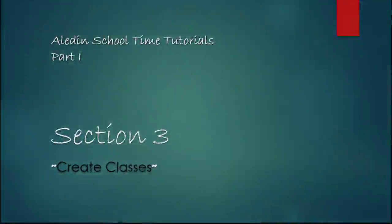Section 3: How to create classes. A class, as we all know, is a body of students who are separated in a room and taught together in a school setting. In Aladdin School Time, classes are created for each academic year to preserve student information. With the details given earlier, let us create the classes. We have only one class to create, but because the students are many, we will divide them into three streams A, B, and C, creating three classes.